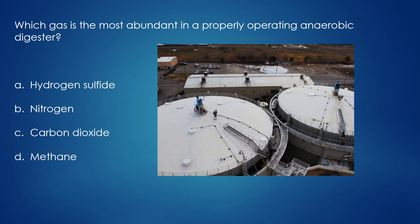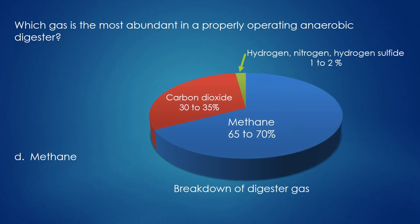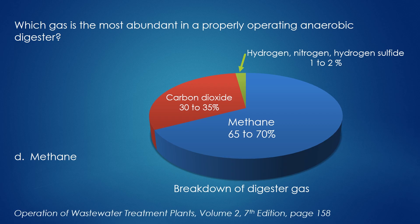Which gas is the most abundant in a properly operating anaerobic digester? Methane. The digester gas is mostly methane — 65-70% of the digester gas is methane. The second most abundant gas in the digester is carbon dioxide at 30-35% by volume. The remaining 1-2% consists of gases such as hydrogen, nitrogen, and hydrogen sulfide. To learn more, go to the textbook Operation of Wastewater Treatment Plants Volume 2, page 158, for more detail.